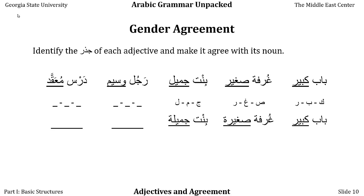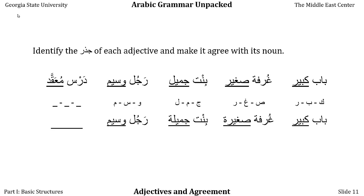In the next example, we have rajul wasim — rajul is man, wasim is handsome. The jidhr of wasim is waw-sin-mim. Because rajul is a masculine singular noun, the adjective remains masculine singular. So rajul wasim, a handsome man.